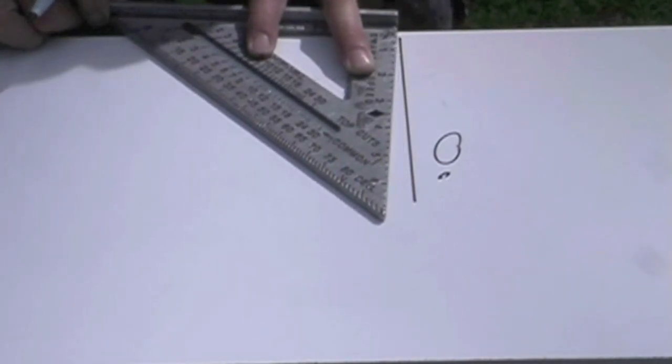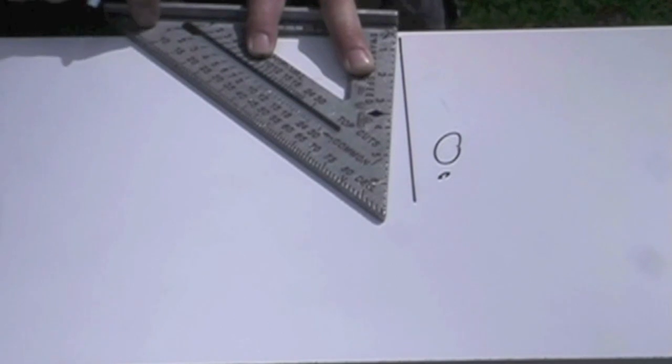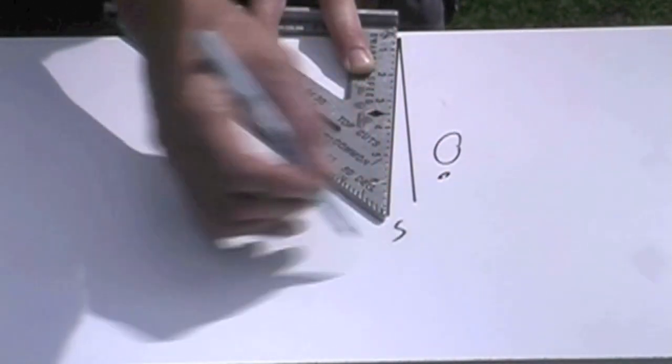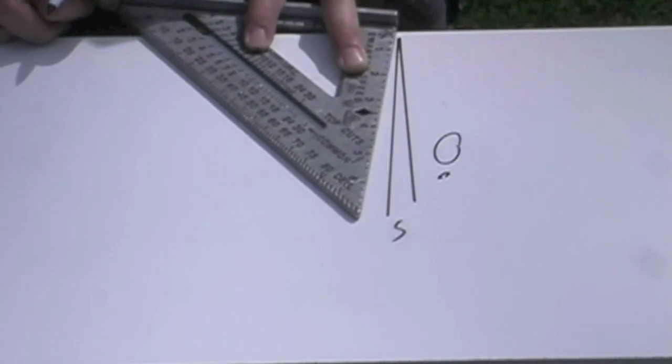If I want five degrees, I pull this over five degrees, and there's a little five right here. This side I mark, that's my five degree angle. If I pull this over to 10 degrees right here, this is 10, and so on.